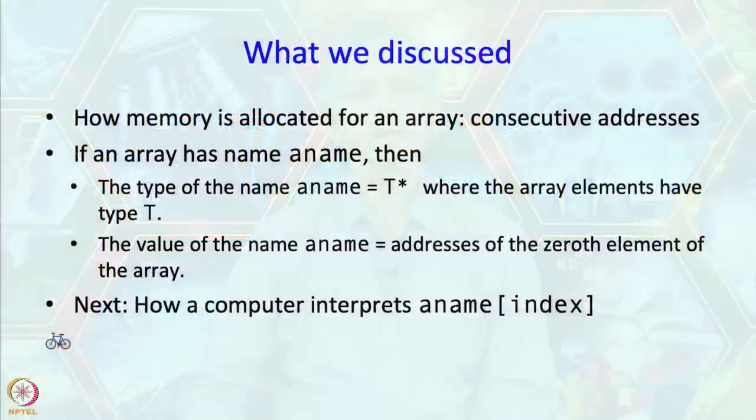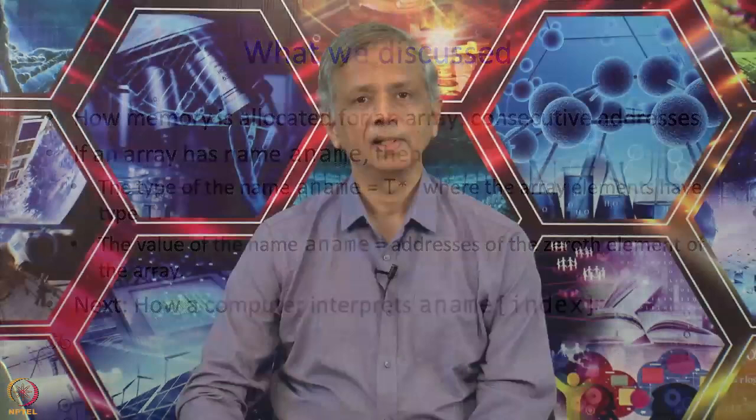Welcome back. In the previous segment we discussed how memory is allocated for an array, what value the name of an array has, and what type the name of an array has.